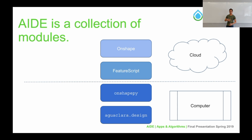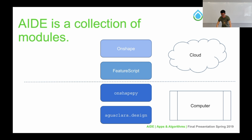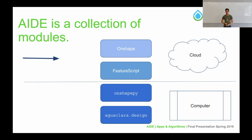AID functions as a collection of interconnected modules, each with their own purpose. Data passes between the user's computer and different cloud-based internet services. In the cloud, we use Onshape and FeatureScript to build these 3D models. Onshape is a 3D modeling service that functions entirely online in your browser, and FeatureScript is an accompanying programming language for Onshape, which allows us to create custom features and designs within Onshape.